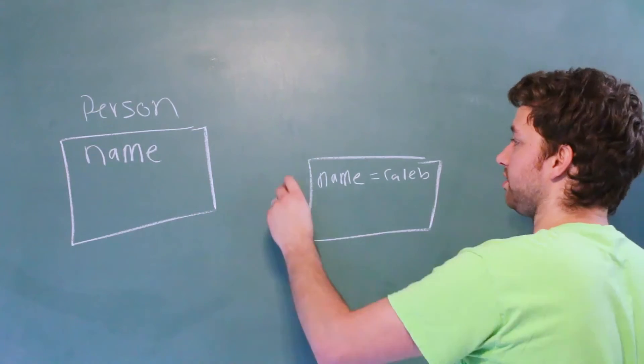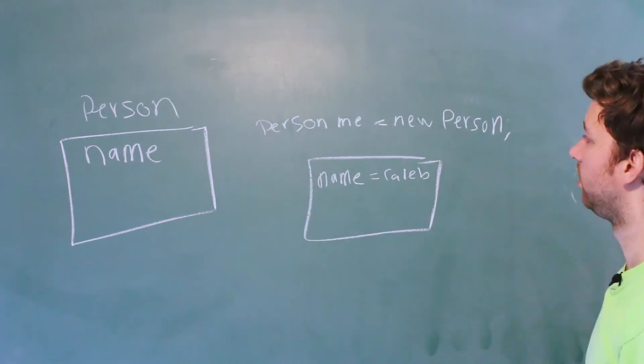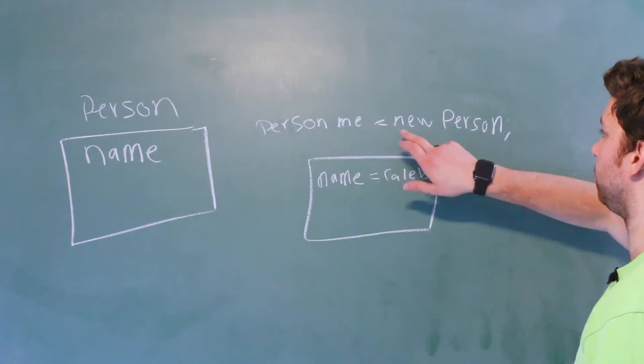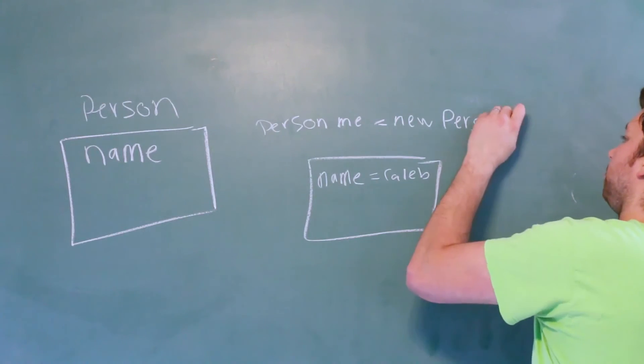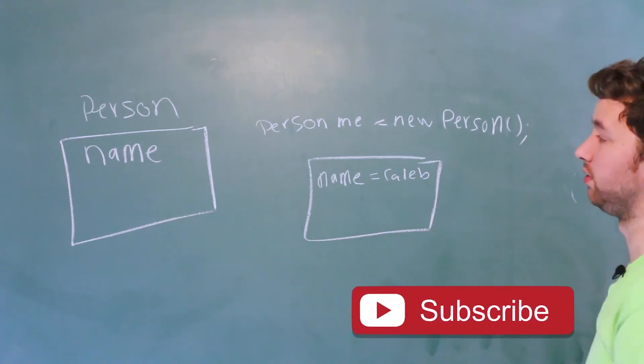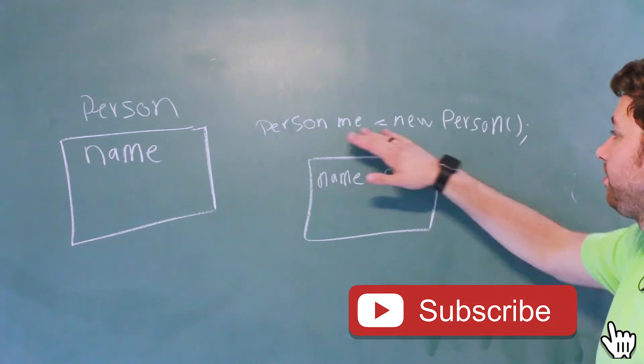So let's say we created this person like so. So we say person me equals new person, and then we put parentheses at the end and a semicolon. So that is how we would create this person.